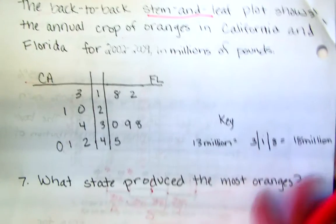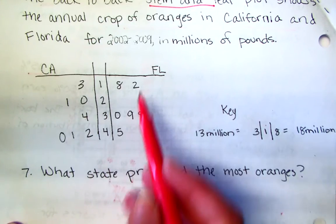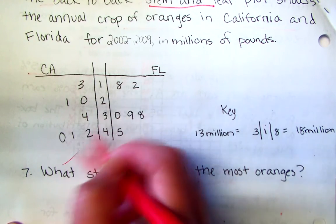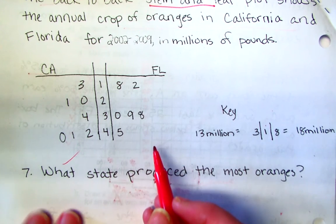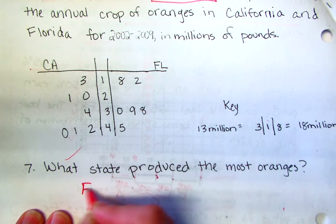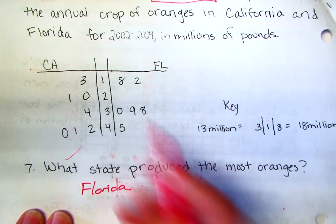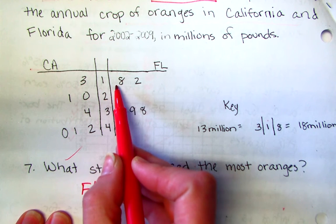It's asking me what state produced the most, so I have to add up how much for California and how much for Florida. The most important thing to remember is how we read the data. I'm going to go ahead and do Florida first. Make sure we know how to read this.